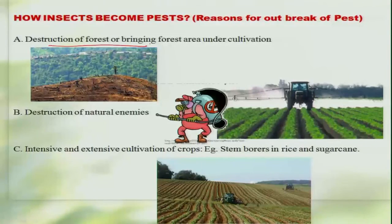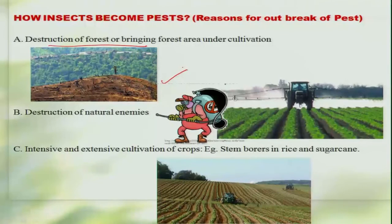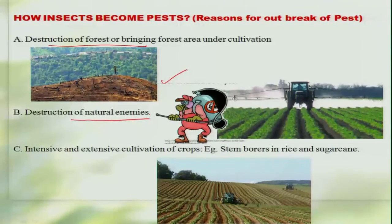Most of these reasons, if you look into them, we can say are man-made. First and foremost is the destruction of forests, or deforestation. When you actually destroy the natural habitat of the insect, those insects have no other way but to start feeding on cultivated crops and thus they become pests. Another important reason is the destruction of natural enemies — through deforestation or by indiscriminate use of pesticides, we kill the natural enemies of these insects, making it quite convenient for them to multiply and become pests.